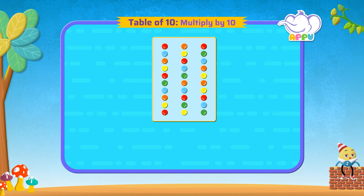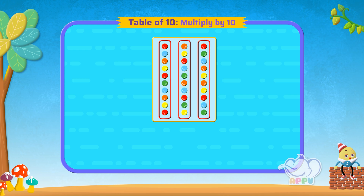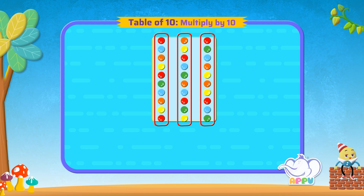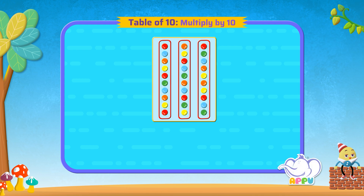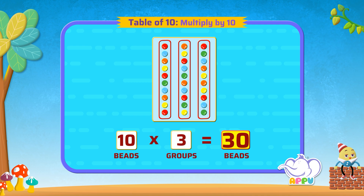But how do we use multiplication tables to do this? There are 10 beads in 3 groups, so we write 10 times 3 equals 30 beads. Amazing!